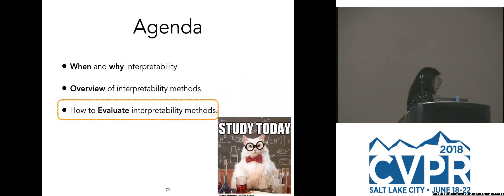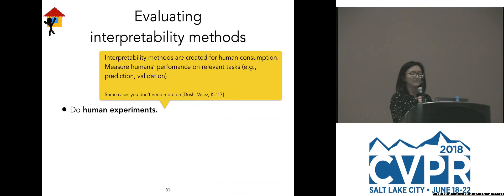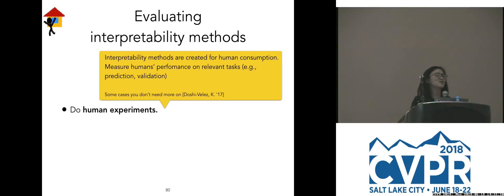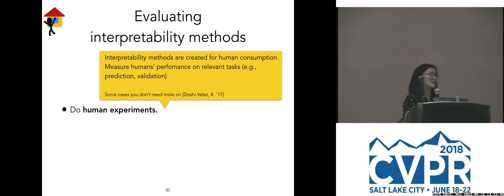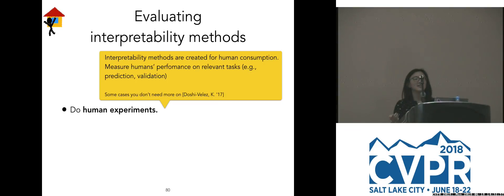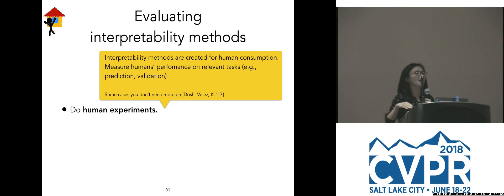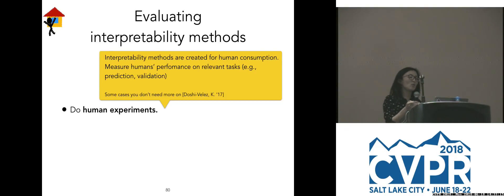We looked at three different types of interpretability methods. Last but not least, I'll briefly talk about how to evaluate interpretability methods. Do human experiments — the sole reason for the existence of interpretability methods is for human consumption, so show us that it works for humans. I recommend giving humans a measurable task. For example, a prediction task: give them an explanation and ask 'what would the model do?' I know what the model did, so I have a ground truth, and I can estimate how well and how quickly humans did it. Or a validation task: give the explanation, give what the ML model did, change it slightly, and ask the human whether the model did the right thing. By giving these tasks, you can quantitatively measure performance.